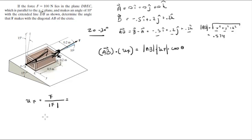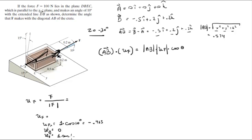You know that the unit vector F has an X component, a Y component, and a Z component. The X component is 1 times cosine of 10 degrees, which equals negative 0.985, because its angle is 10 degrees. The Y component is 0 because the force is aimed straight that way. The Z component is 1 times sine of 10 degrees, because this is 1·sin(10) and this is 1·cos(10), giving 0.174. So the unit vector F equals negative 0.985i + 0j + 0.174k.